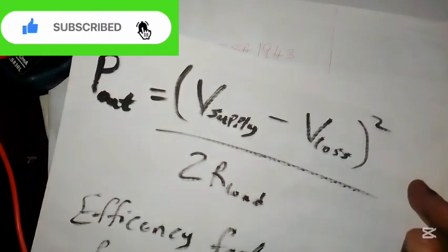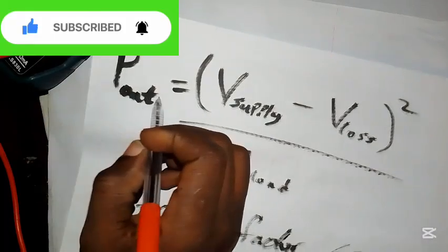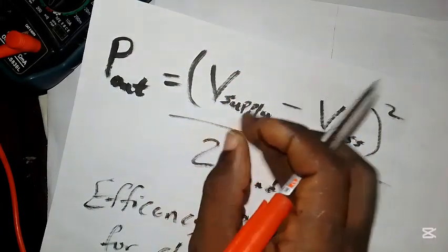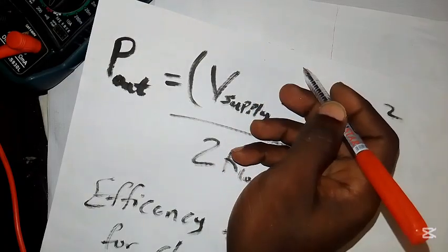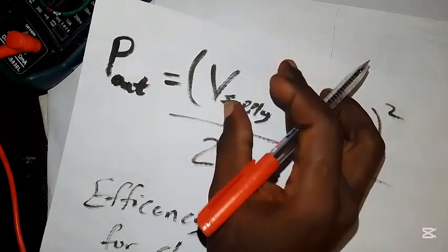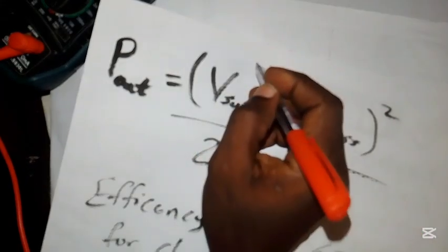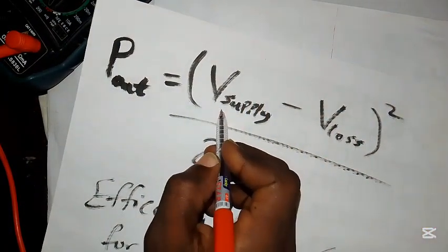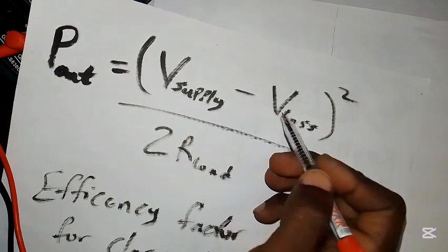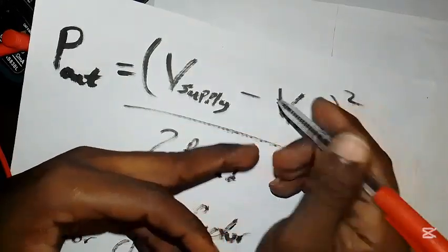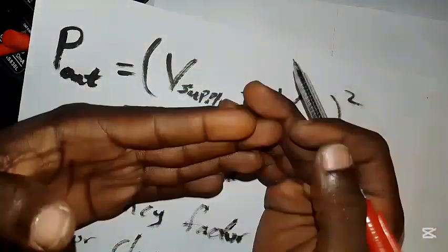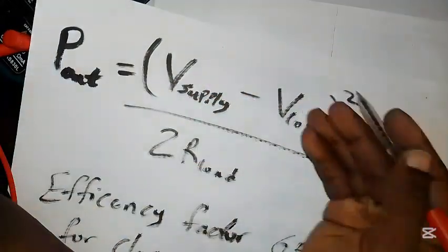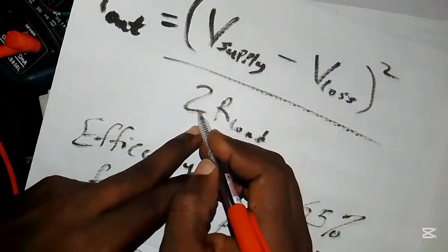Look at the formula: P_out equals (V_supply minus V_loss) squared, all over (2 × R_load). P_out is the power output. V_supply is the voltage coming from your transformer into your amplifier — it flows through the diode and capacitor where it is rectified and filtered. The output you get from there is the voltage supply. V_loss represents the power loss across the transistors, usually between five and eight volts maximum — let's use eight volts.